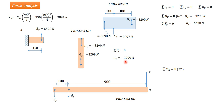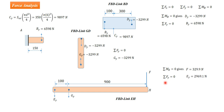Now focusing on link EH, we apply the moment equation of equilibrium — summation of moments of all forces about point E equals zero. This gives F = 329.9 N. Applying summation FY = 0 gives EY = 2969.1 N.